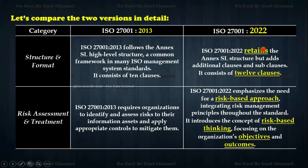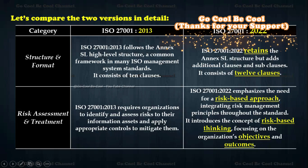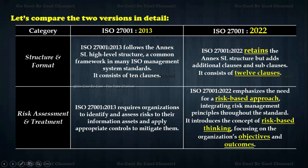As far as risk assessment and treatment is concerned, the 2013 version requires organizations to identify and assess risks to their information assets and apply appropriate controls to mitigate them. ISO 27001 2022 emphasizes a risk-based approach, integrating risk management principles throughout the standard and introducing the concept of risk-based rethinking, focusing on organizational objectives and outcomes.